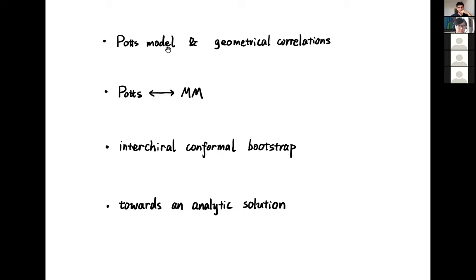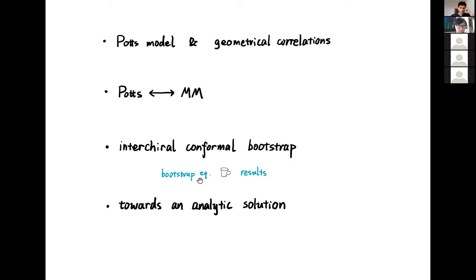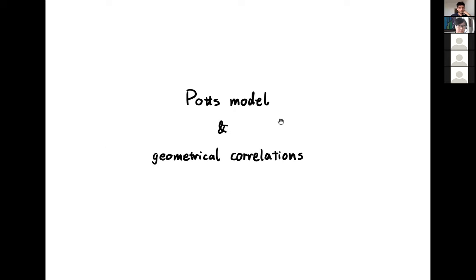Here's the plan for the talk: we'll start with a brief introduction of the Potts model and the central objects we're going to study, namely the geometrical correlations. Then we'll make some connections between the Potts model and the minimal models. After that I'll describe the bootstrap problem, and in the last part I'll discuss further aspects including the logarithmic nature of the model. We'll take a coffee break after setting up the bootstrap equation.